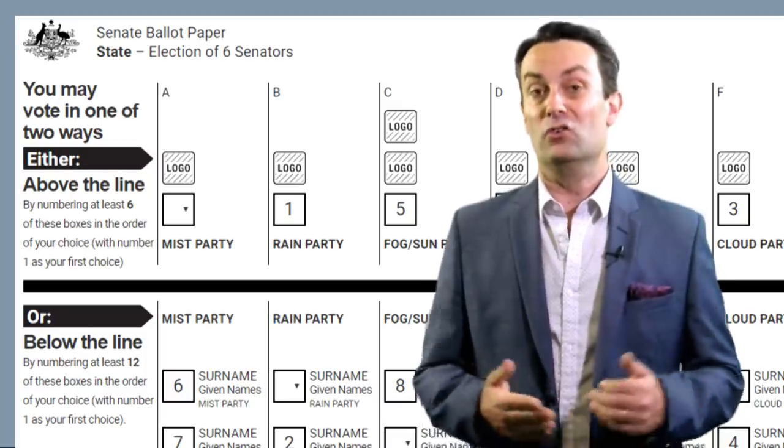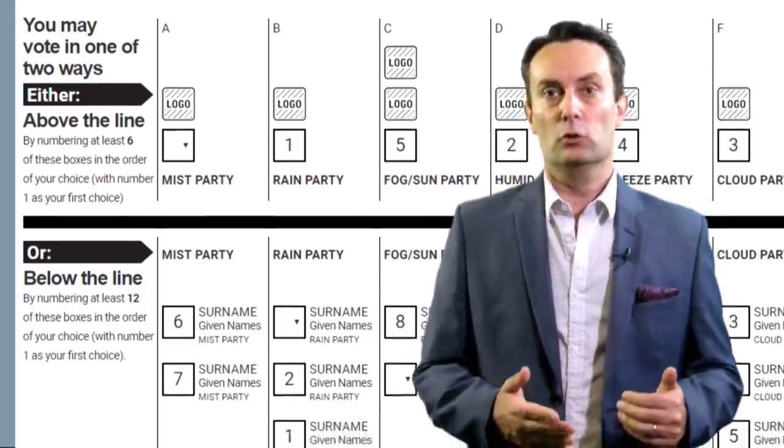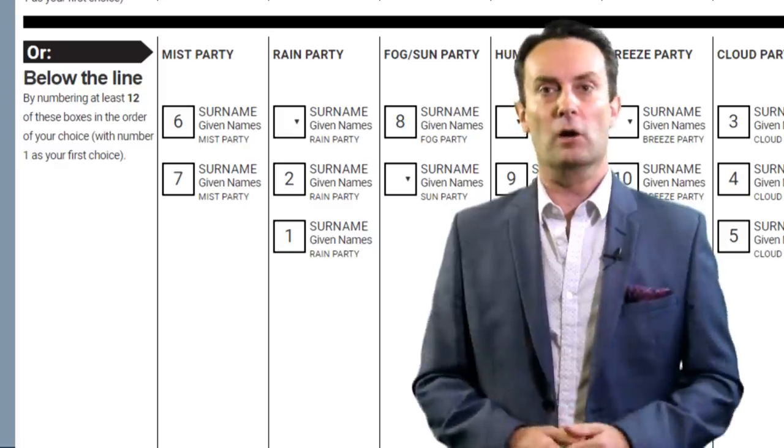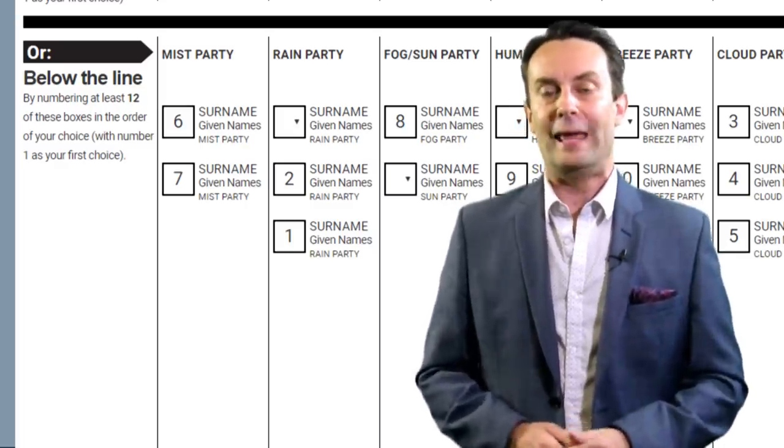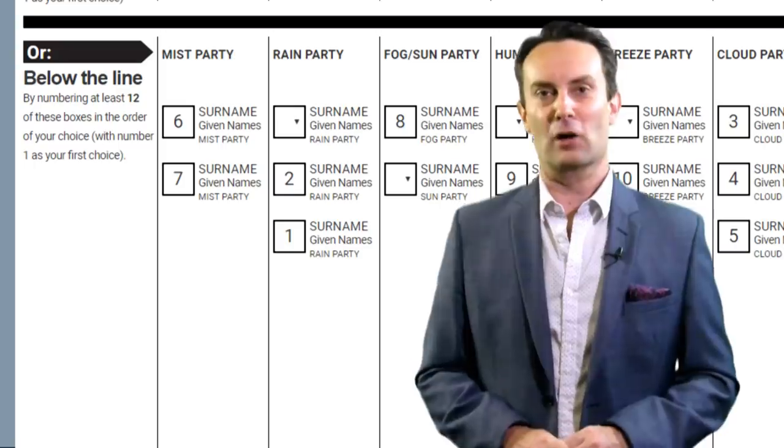If you want to vote for them in a different order of preferences, you'll need to vote for them below the line in the order you prefer and completely ignore all boxes above the line.